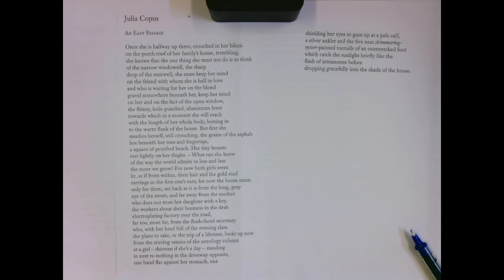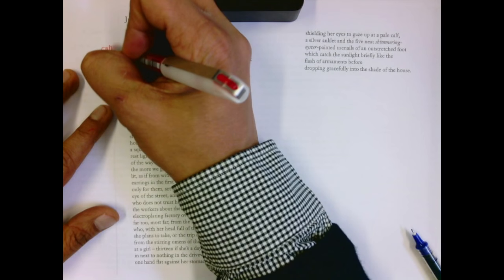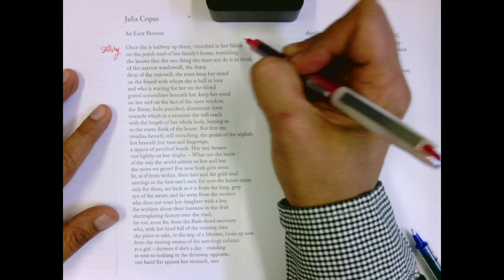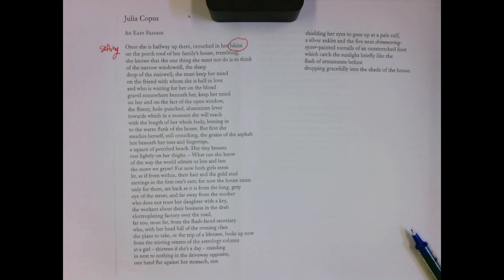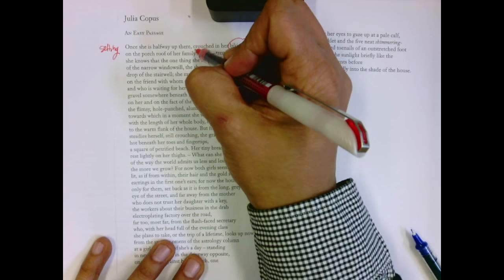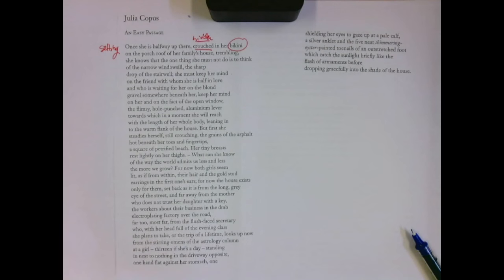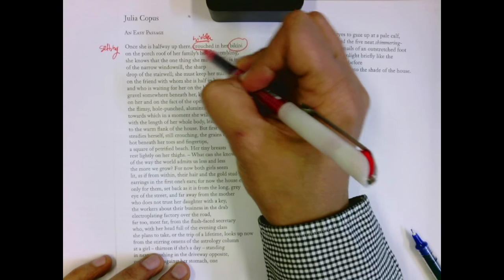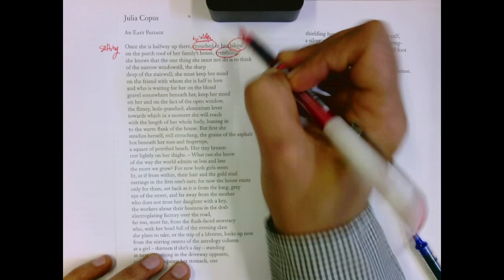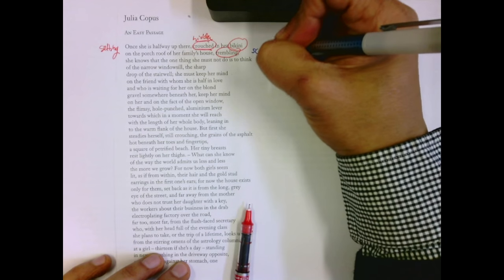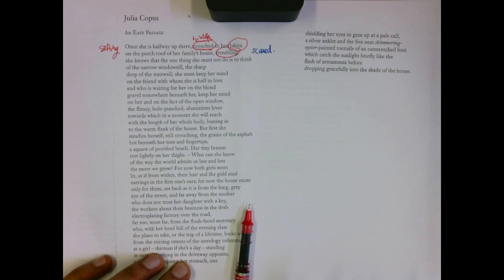Once she's halfway up there, crouched in her bikini on the porch roof of her family's house, we get the setting right away. We get what she's wearing. This will link to details later. Crouched, hidden, in a vulnerable position. She's trembling, she's crouched, she's scared. The verbs show us.